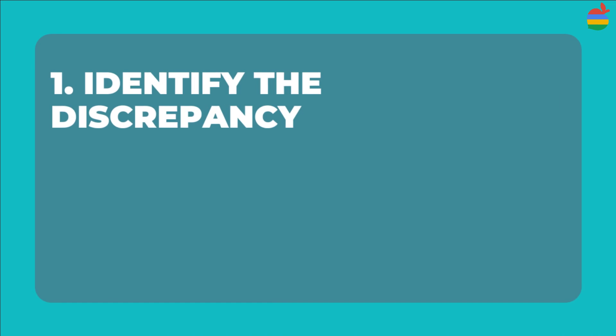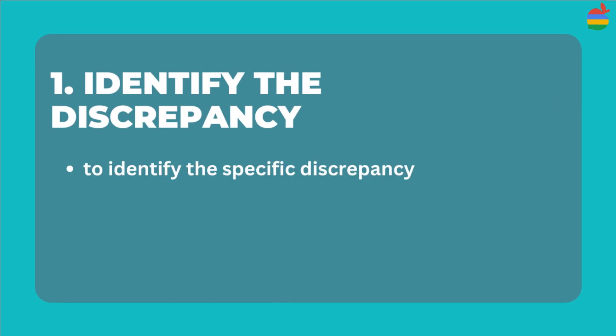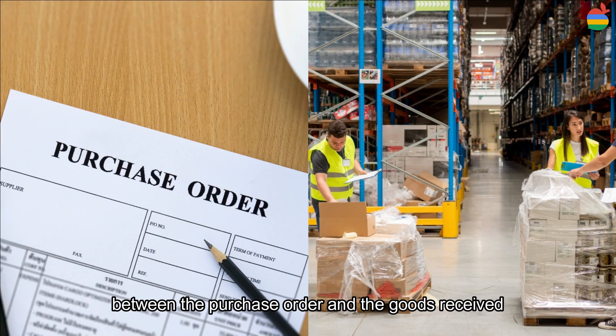First, identify the discrepancy. The first step is to identify the specific discrepancy between the purchase order and the goods received.